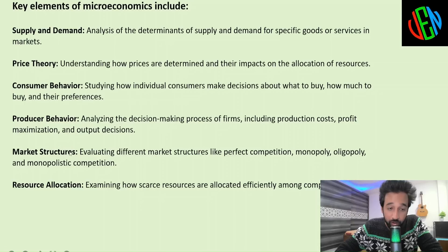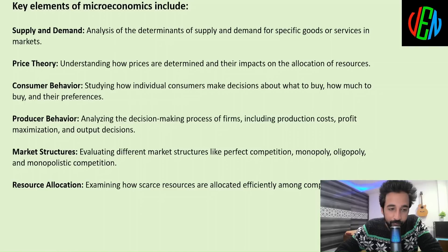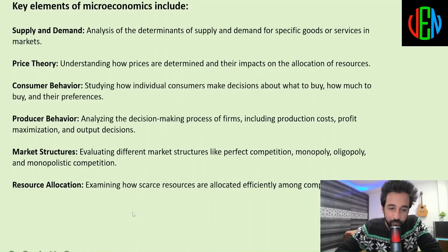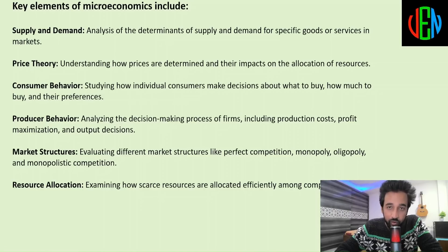The fifth element is market structures — evaluating different market structures like perfect competition, monopoly, oligopoly, and monopolistic competition. The sixth and last is resource allocation — examining how scarce resources are allocated efficiently among competing ends. These are the key elements of microeconomics, and remember these all relate to individual behaviors, not the economy as a whole.